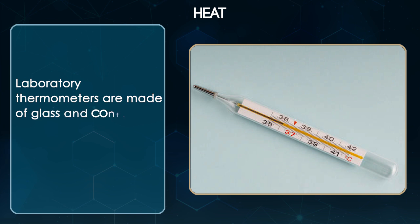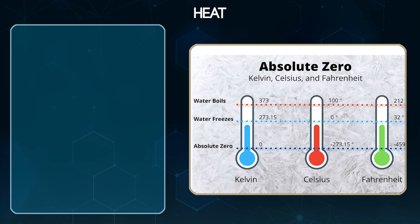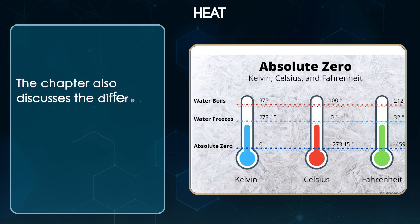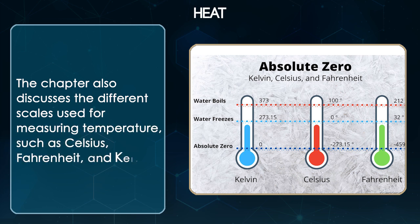Laboratory thermometers are made of glass and contain a liquid such as mercury or alcohol that expands when heated. The chapter also discusses the different scales used for measuring temperature such as Celsius, Fahrenheit and Kelvin.